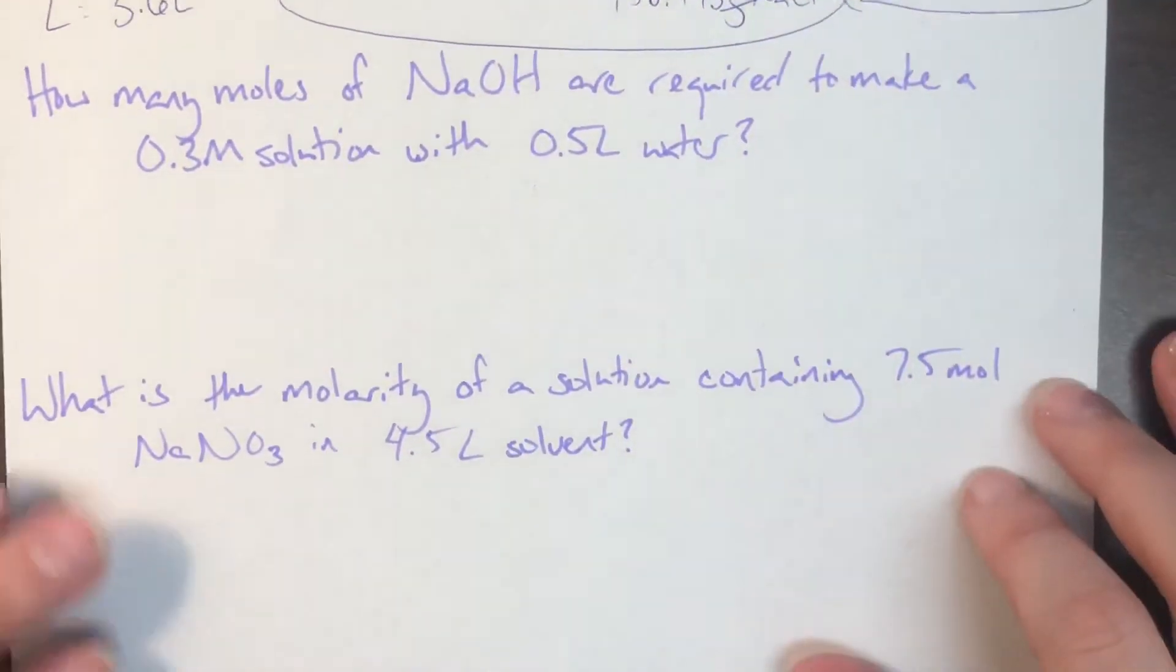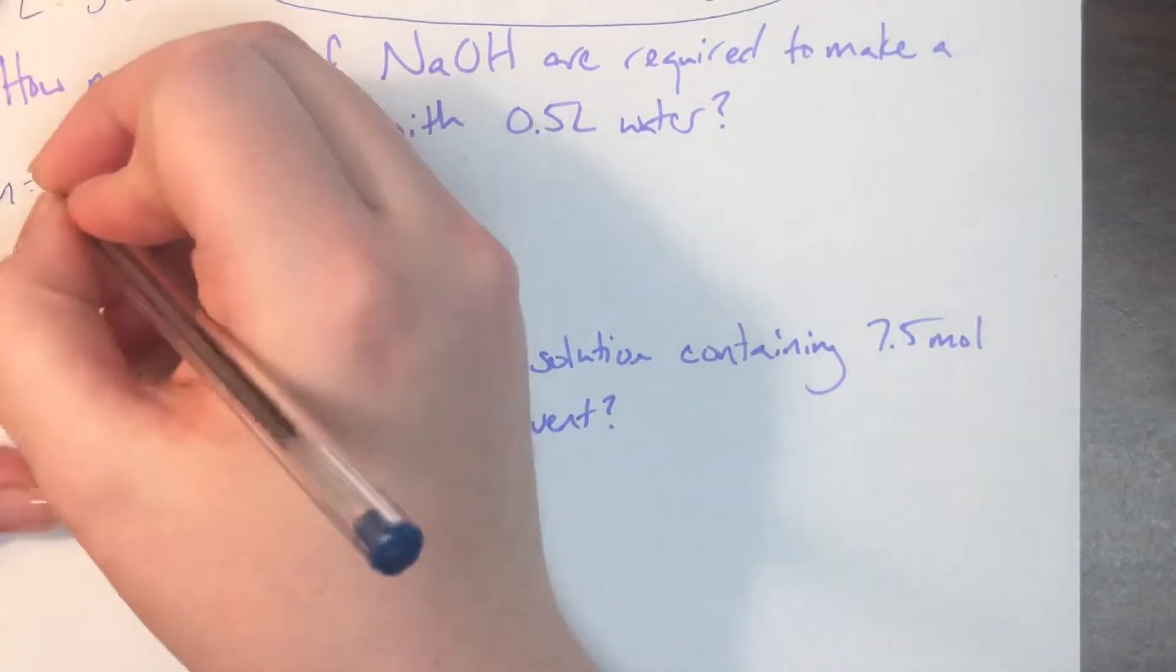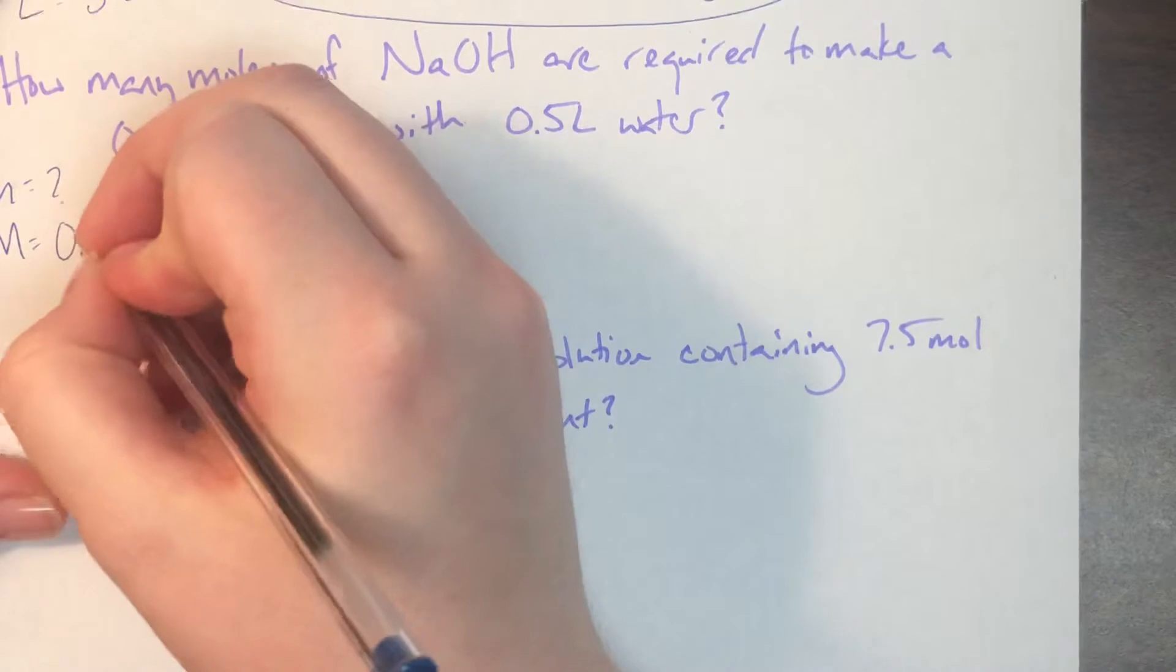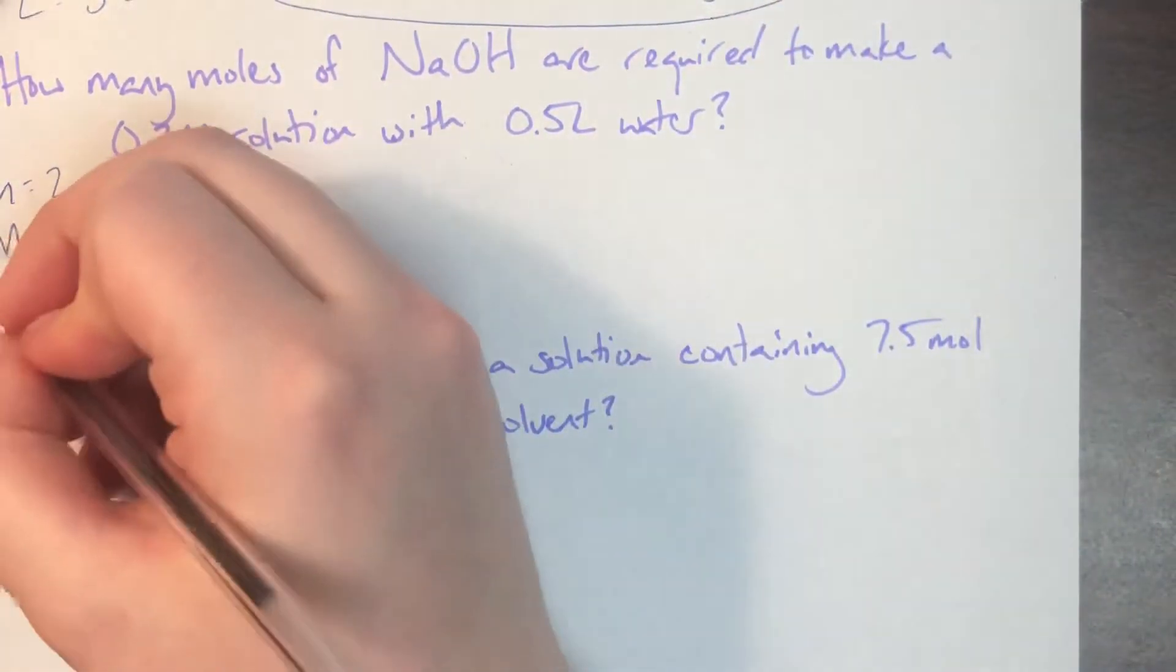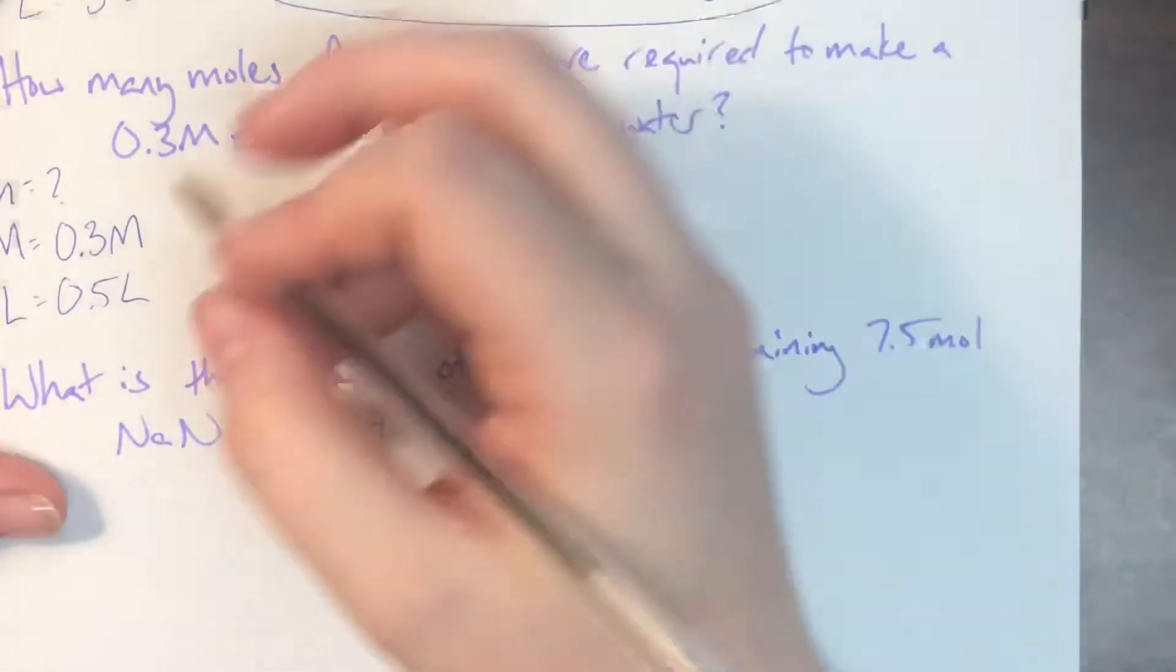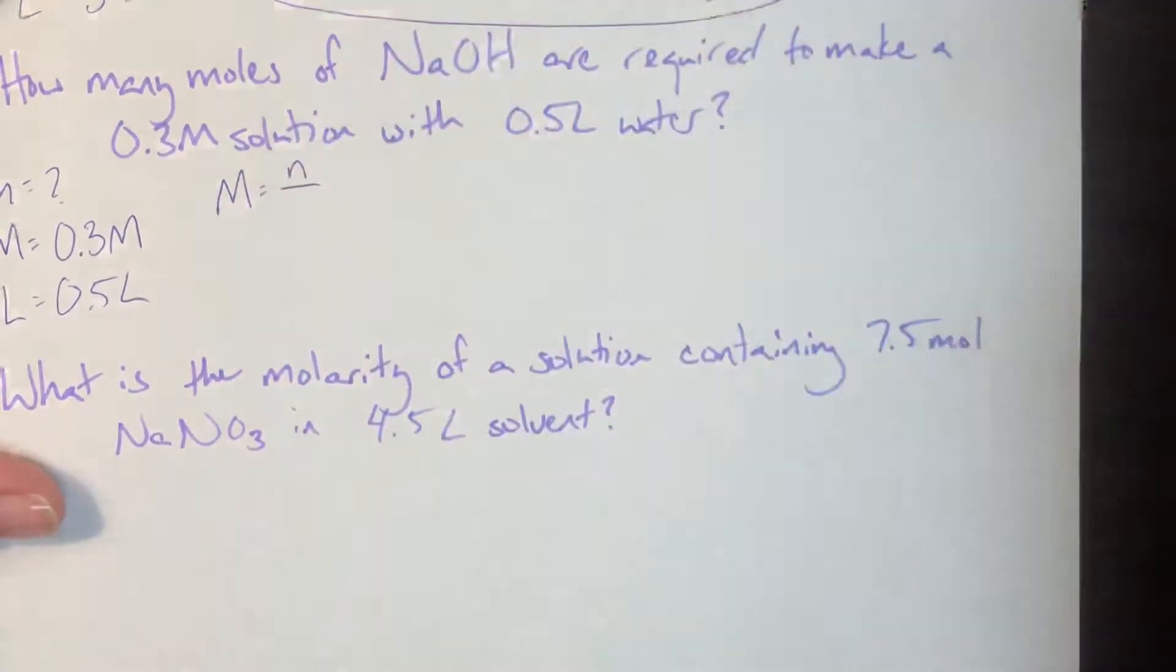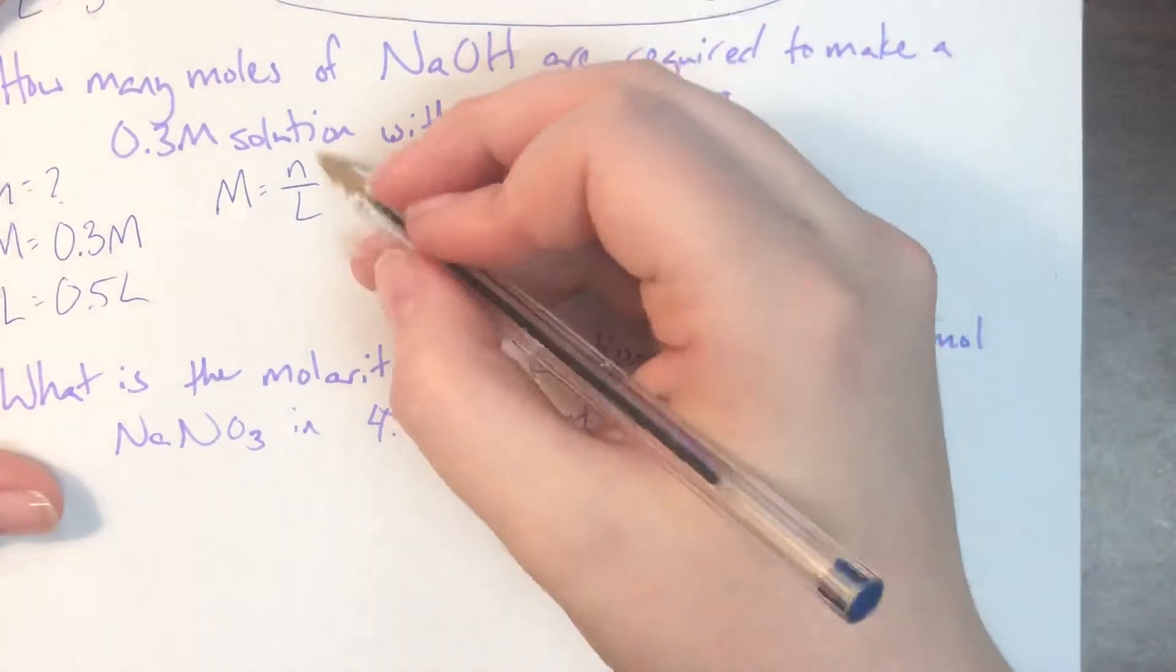Next problem says, how many moles of sodium hydroxide, so I know that I do not know what my N is, are required to make a 0.3 molar solution. So my capital M is going to be 0.3 molar, and I have 0.5 liters of water. I have everything that I need, I just need to go ahead and rearrange the initial equation. My molarity is equal to my moles of solute divided by liters of solvent, so moles divided by liters.